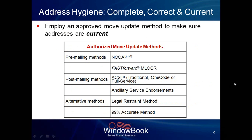The next step is to make sure you get a current address, and to do that you have to use one of the authorized move update methods. There are several different kinds. We consider a couple to be pre-mailing or proactive methods, and a couple that are post-mailing or reactive methods. And then there are a couple of alternative methods described in the Postal Service documentation when they talk about move update.